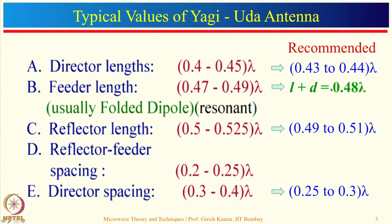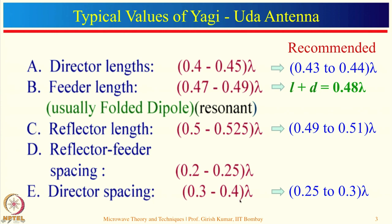The reflector should be greater than the feeder length — between 0.49 to 0.51 lambda depending on D. For the director, books recommend 0.4 to 0.45 lambda, but experience shows 0.43 to 0.44 lambda gives good gain. The spacing between reflector and feed dipole is generally 0.2 to 0.25 lambda. Director spacing is recommended at 0.3 to 0.4 lambda in books, but from experience 0.25 to 0.3 lambda is better.